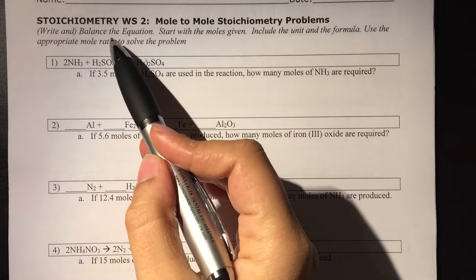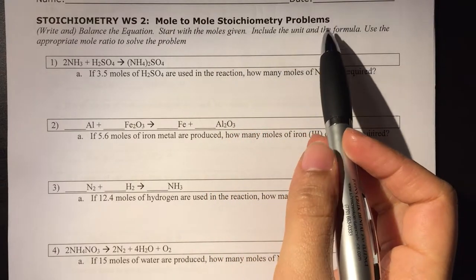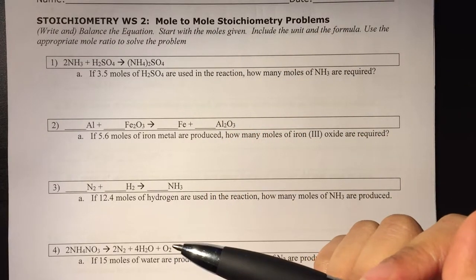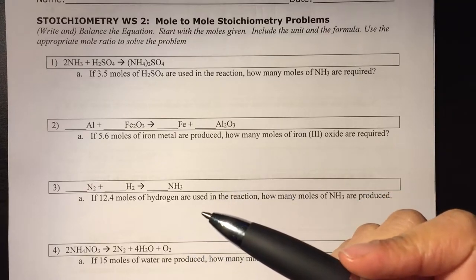Now we're looking at stoichiometry worksheet 2, which is the mole-to-mole stoichiometry problems. If you remember the last worksheet, we learned how to create mole-to-mole ratios, and this worksheet will actually be applying them to a problem.